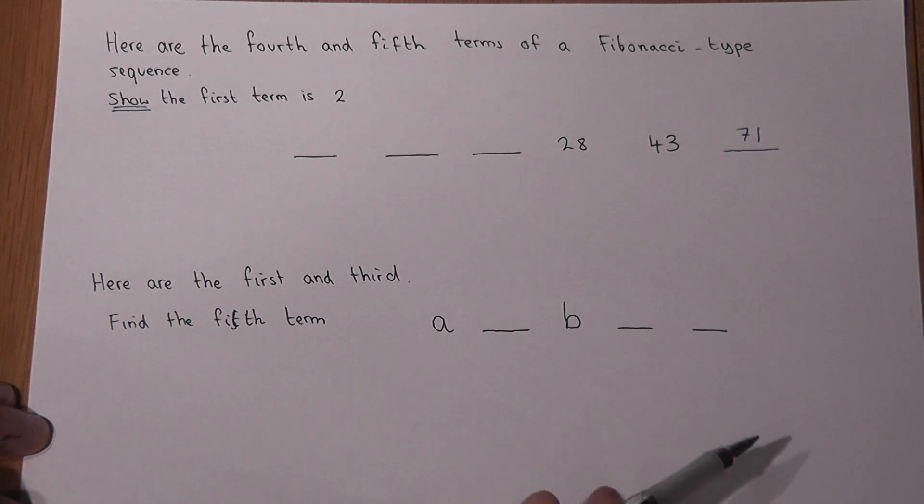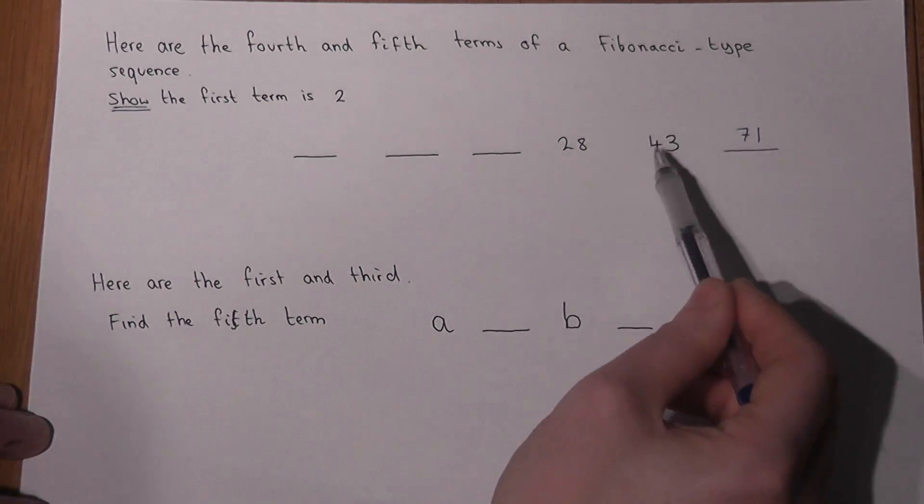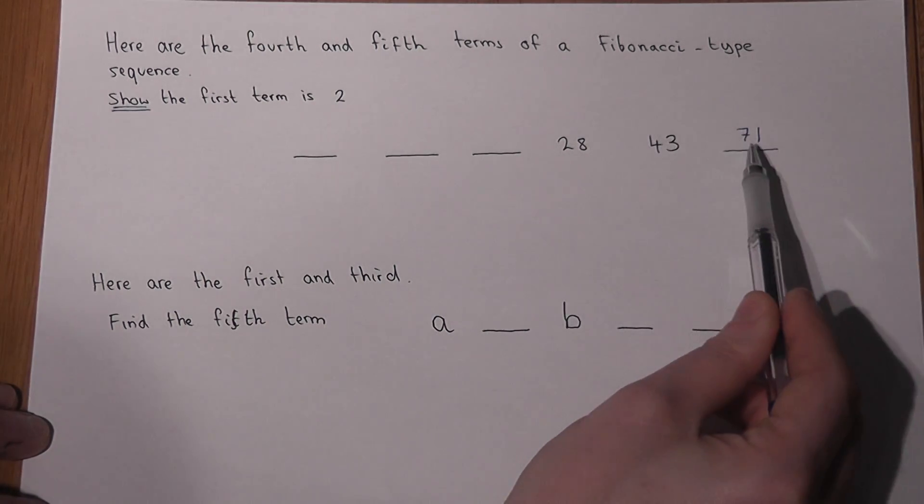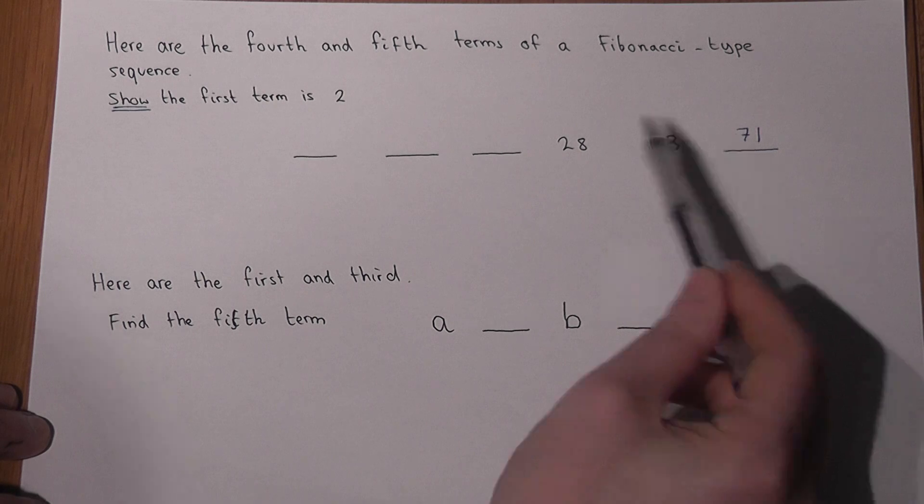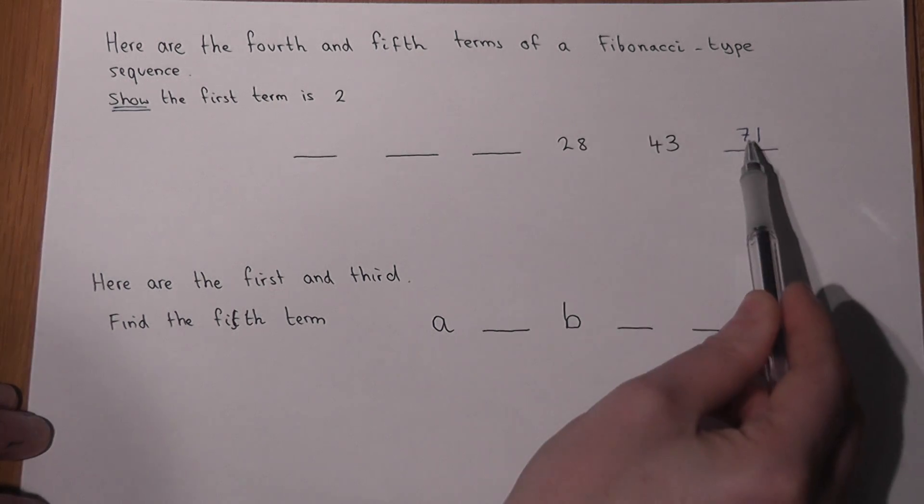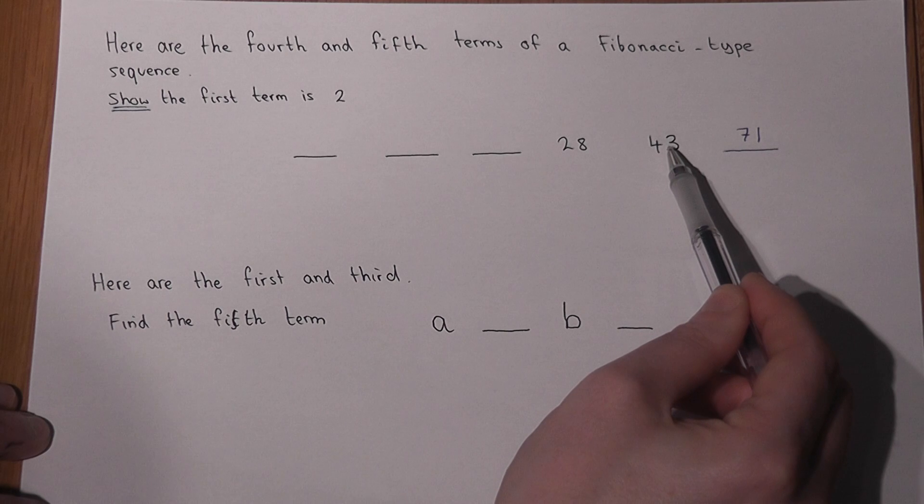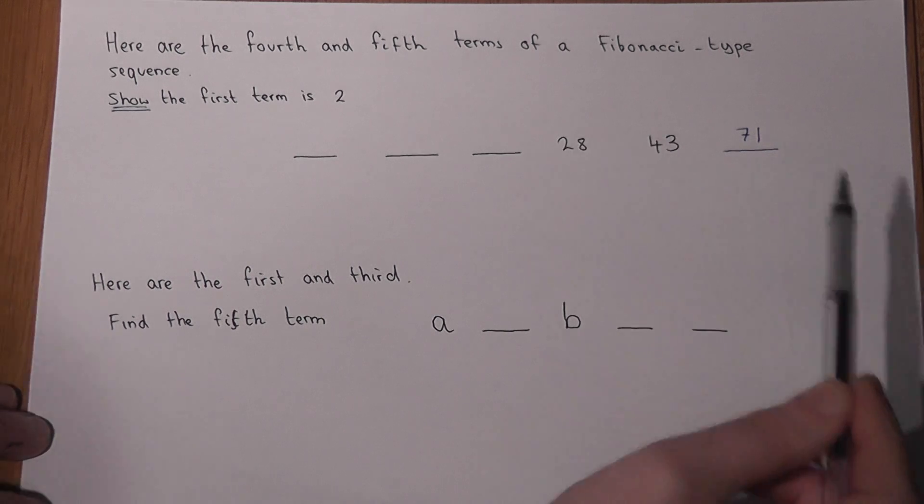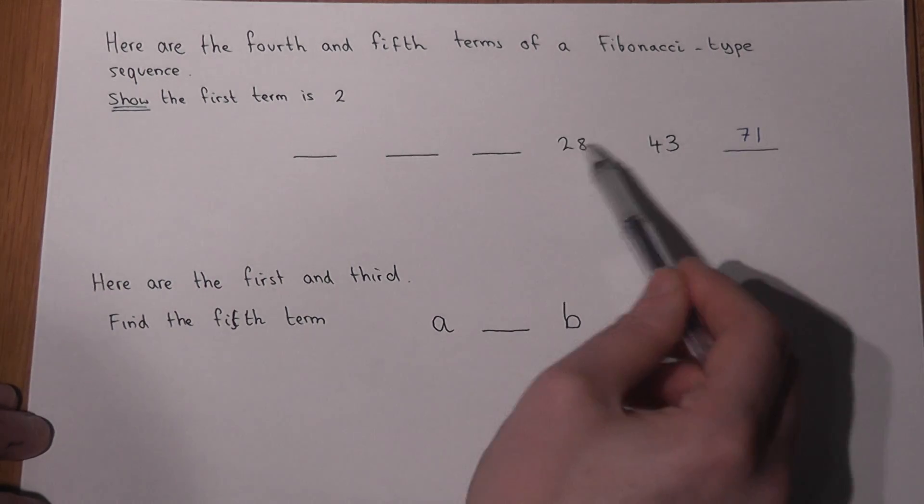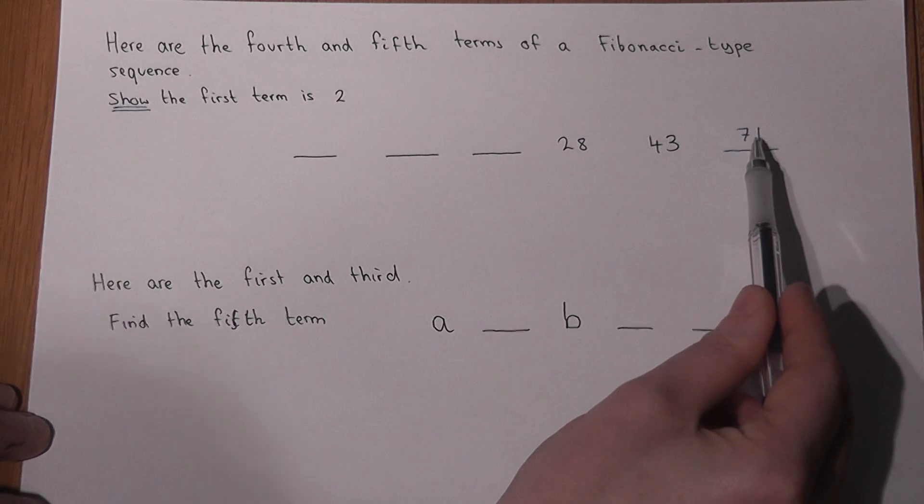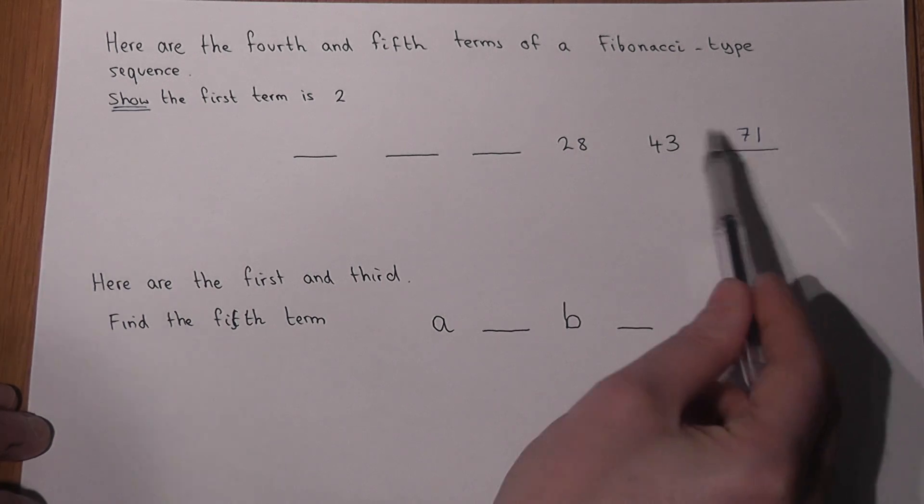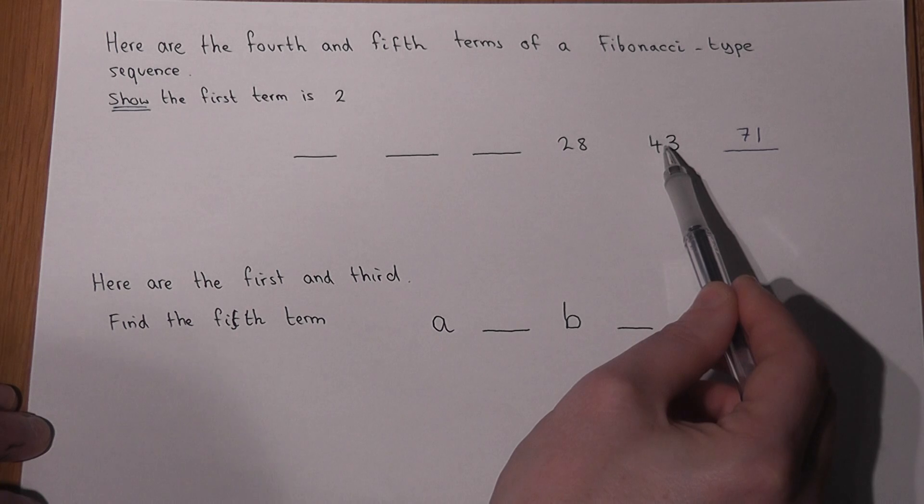Now what you will observe in a Fibonacci-type sequence is that if we know, for example, the fifth and the sixth, then to work out the fourth we would do 71 take away 43, equals 28. Just as those two add to make this one, if I do this take away 43, I can work out the previous one.